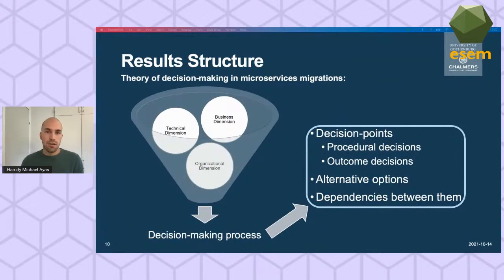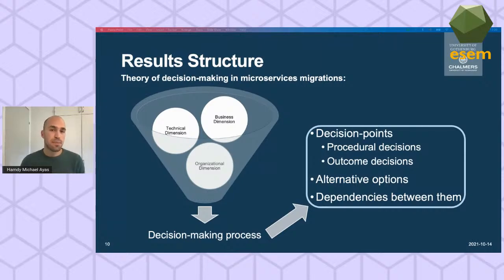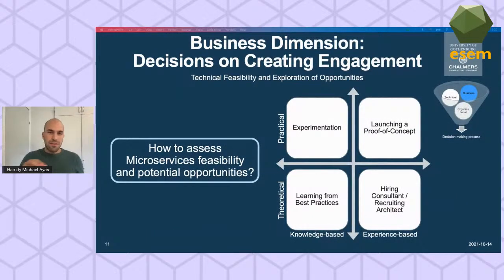The interviewees operated in 12 different business domains including banking, gaming, telecom, and other industries. The result of our grounded theory analysis is the construction of an initial theory of decision making in microservices migrations. In this theory we present three main themes: the business, technical, and organizational dimensions of decisions. We represent these in decision points with procedural or outcome decisions, alternative options, and dependencies between them.